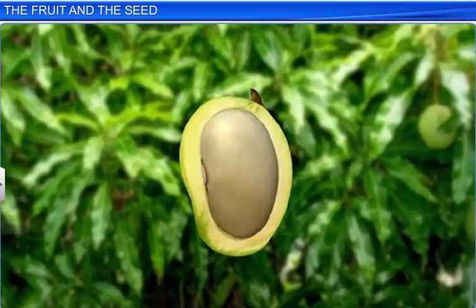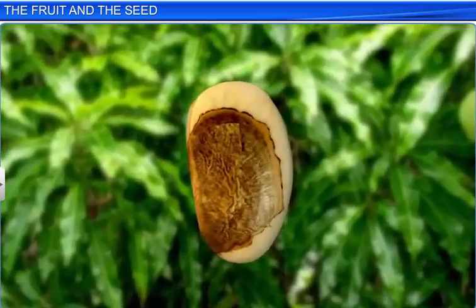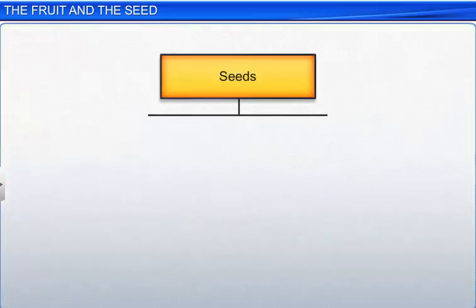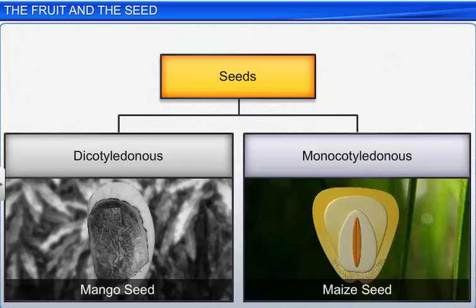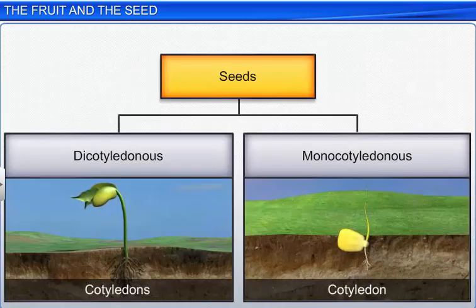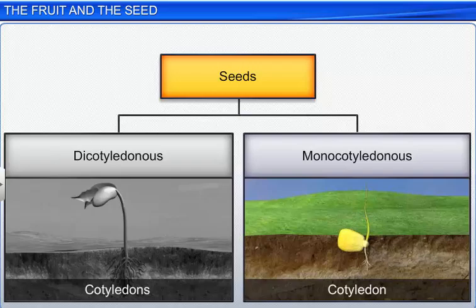Apart from the pericarp, the other part of a fruit is the seed. Based on the number of cotyledons, the seeds of flowering plants are classified as dicotyledonous and monocotyledonous. A seed with two cotyledons is called dicotyledonous, and with a single cotyledon is called monocotyledonous.